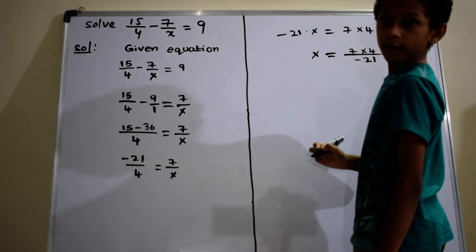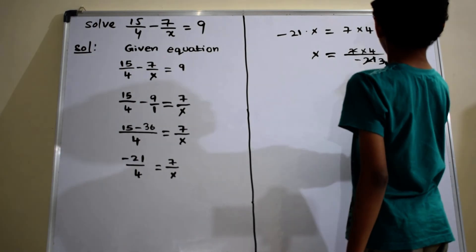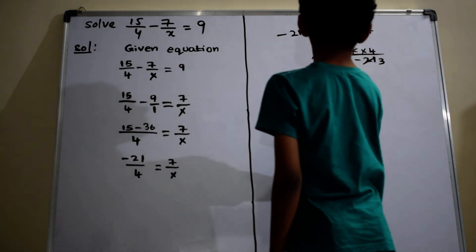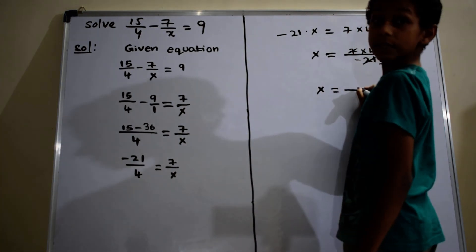Here, 7 cuts 21 three times. x equals to minus 4 by 3.